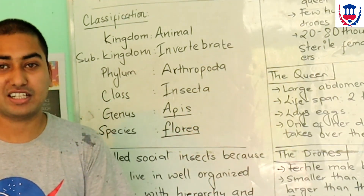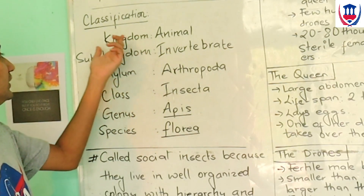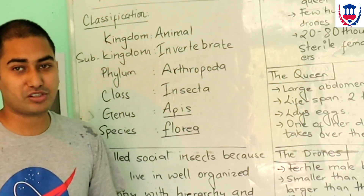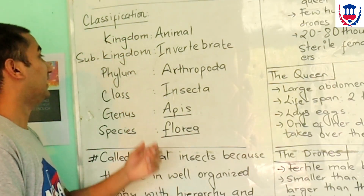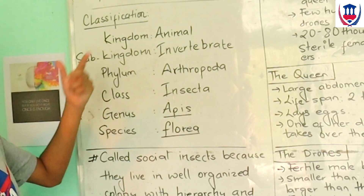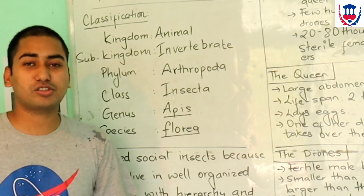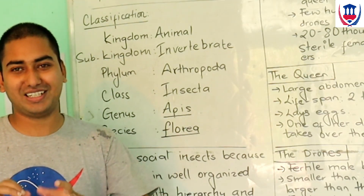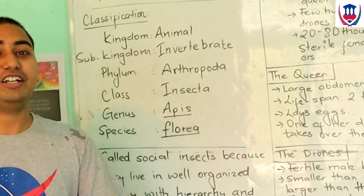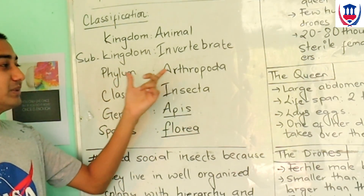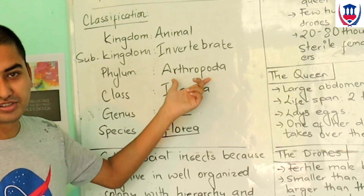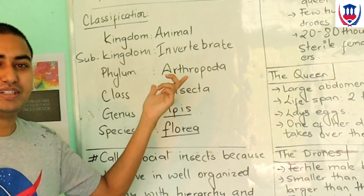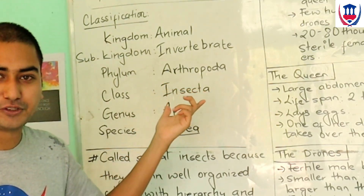Let's start with scientific classification. Using classification, the kingdom of honeybee is Animalia. In all kingdoms, it belongs to Invertebrates. In the phylum, it belongs to Arthropoda — meaning it has jointed legs.